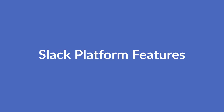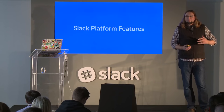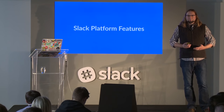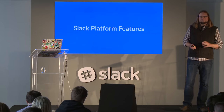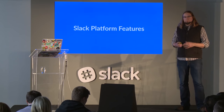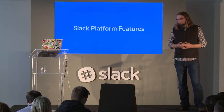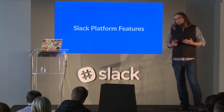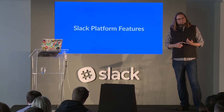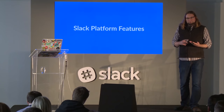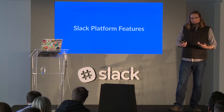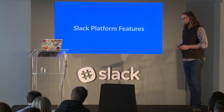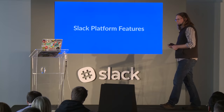So let's talk about the Slack platform features. There are three mechanisms in particular that you can use to interact with Slack from your code. The first one is notifications. Then we have slash commands and also bots. I'm going to talk about these in some detail.